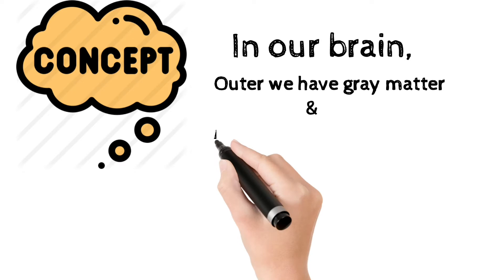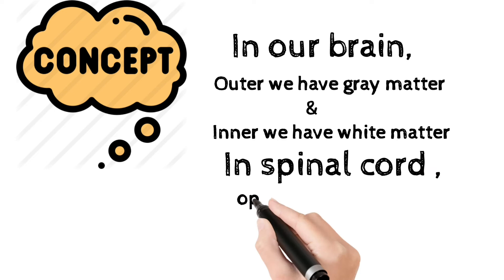In the spinal cord, it is the opposite: the outer side is white matter, and the inner side is grey matter.